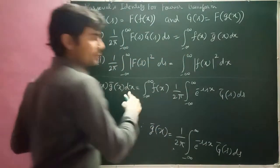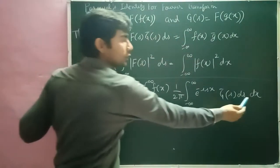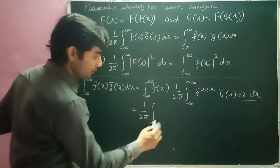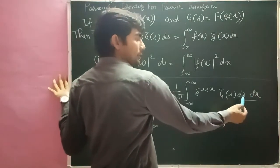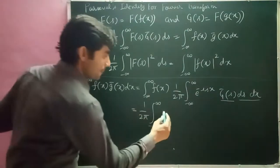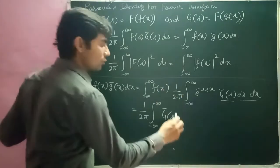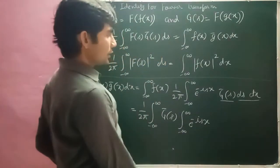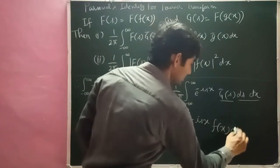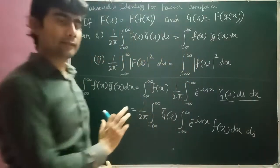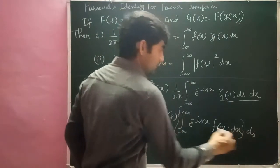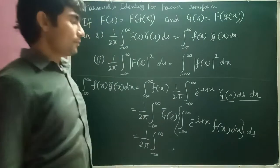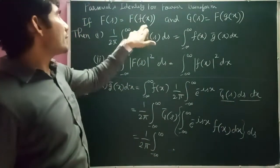अब हम integration with respect to x करने वाले हैं, ds भी आ गया। Order of integration को interchange करने वाले हैं। Constant (1/2π) बाहर निकाल दो। पहले integration करेंगे with respect to x, तो G̅(s) बाहर निकाल रखते हैं। इंटेग्रल के अंदर रहेगा e^(−isx), f(x), dx। यह जो expression है — this is the Fourier transform of f(x), और Fourier transform of f(x) को F(s) लिखते हैं।